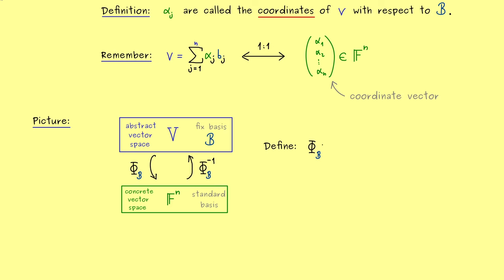And from before we already know what to do because every v can be written as a linear combination. And now this linear combination we map to a column vector. And in this column vector we only find the coordinates alpha1 to alpha n of v. So there we have our map phi B which goes from V into Fn. And indeed we already know it's a bijection.